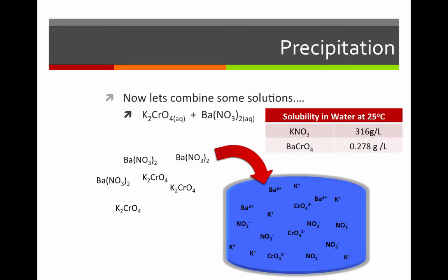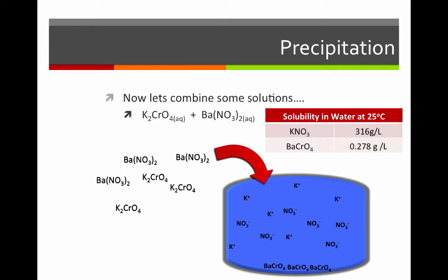If we look at the solubility values for potassium nitrate and barium chromate, we see that potassium nitrate is very soluble — 316 grams will dissolve per liter of water. However, barium chromate is very insoluble. That means the barium ions and chromate ions floating around in solution will find each other and combine to form a solid — three barium chromate formula units — leaving potassium and nitrate as remaining ions. This is called a precipitation reaction; barium chromate has formed a precipitate, a solid from two aqueous solutions.